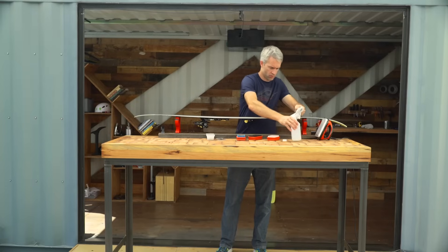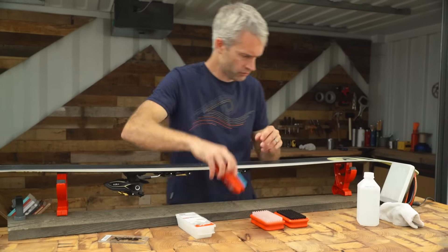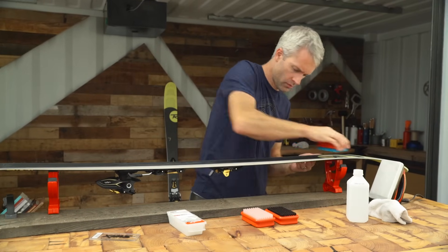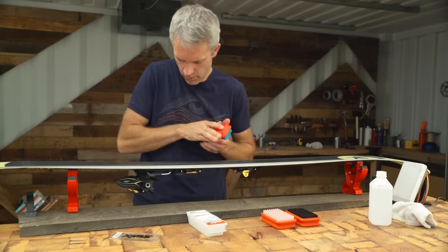Use rubbing alcohol and a clean towel to prepare the base for wax. If your bases are visibly dirty, brush them off with a wire brush before using the alcohol. Make sure you brush, wax, and scrape from tip to tail.